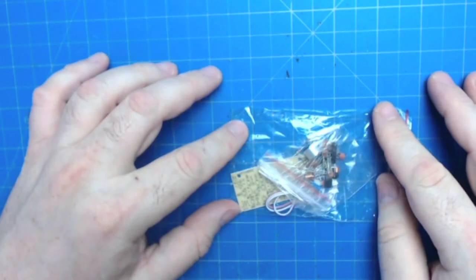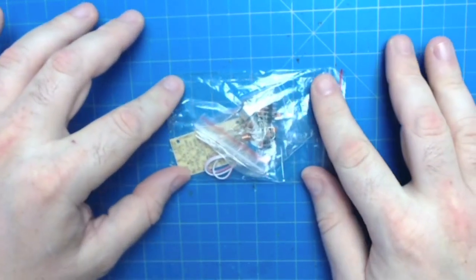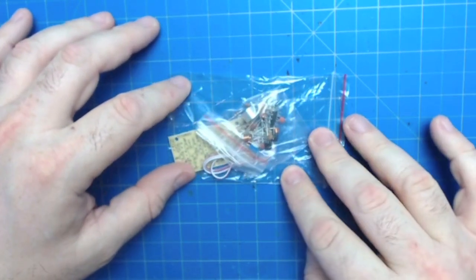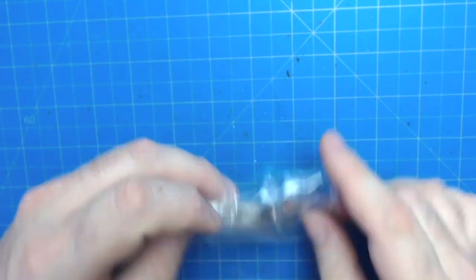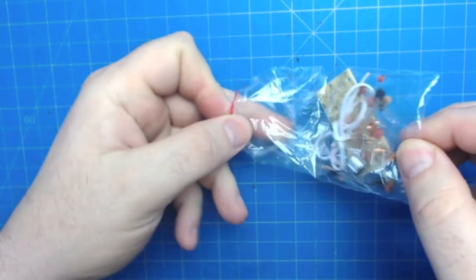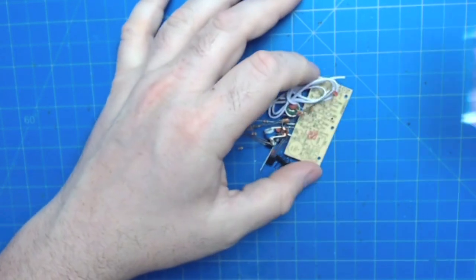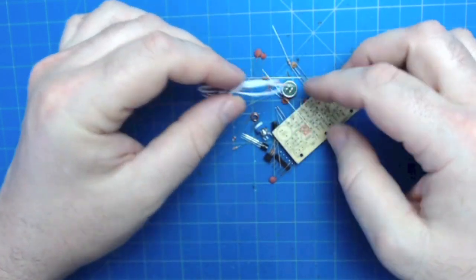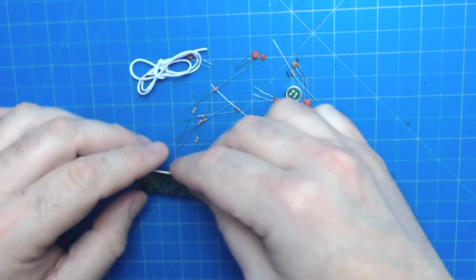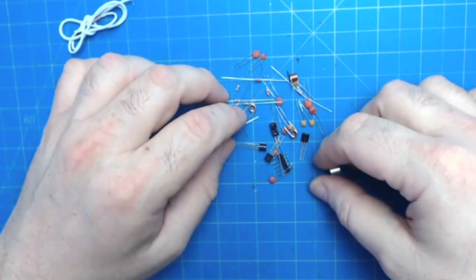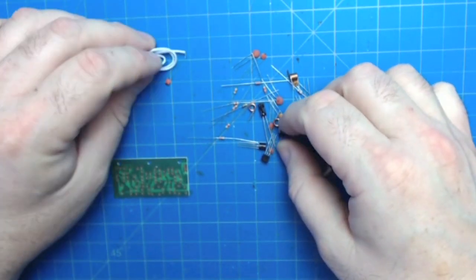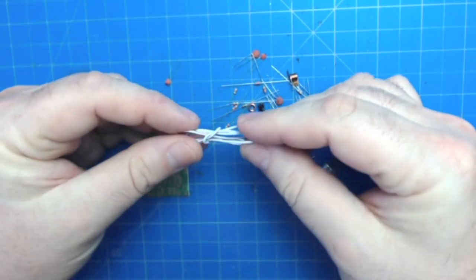My next item here in the sub-gigahertz radio, this is an FM transmitter. Some people call this a bug kit. Get it opened up here, dump out the parts. It has a pretty simple PCB and this piece of wire is for the antenna.